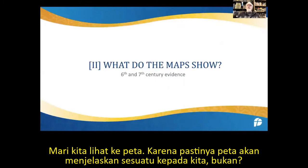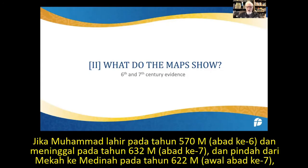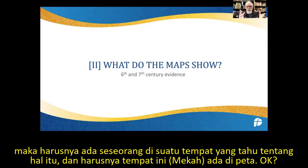Let's look at the map, because certainly the map should tell us something. If Mecca was there in the sixth and seventh century, it should be on the maps from that period. Muhammad was born in 570 — that's the sixth century — died in 632 — the seventh century — and moved from Mecca to Medina in 622. So certainly someone somewhere should have known about it, and this place should be on a map.